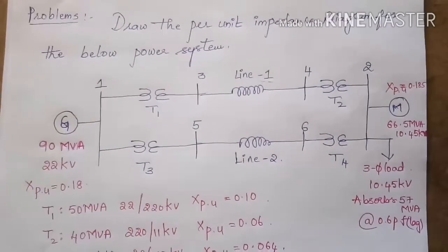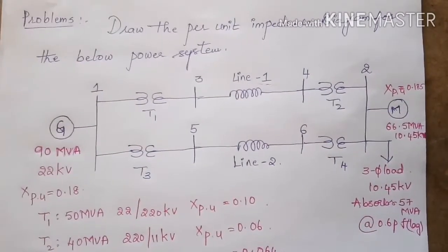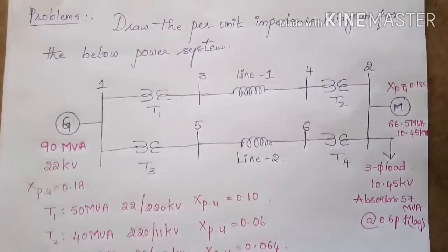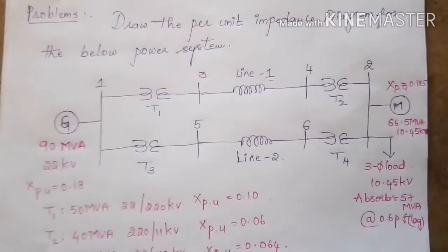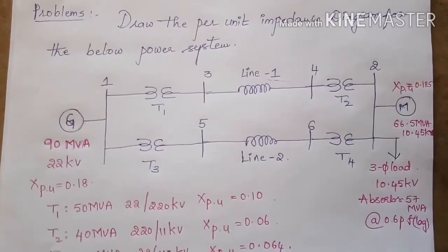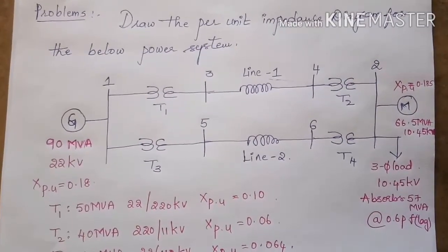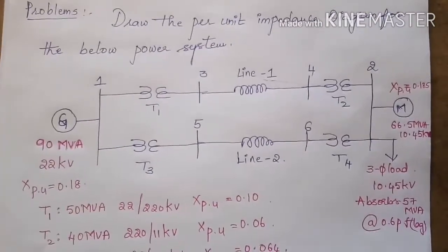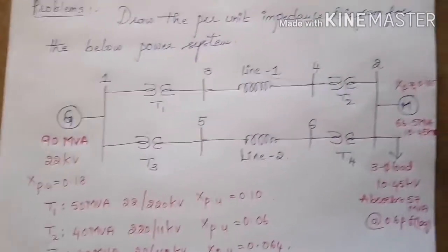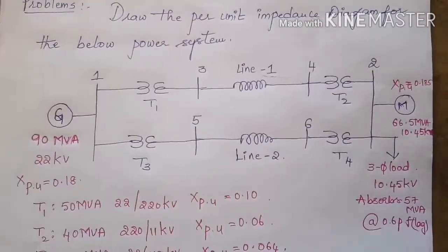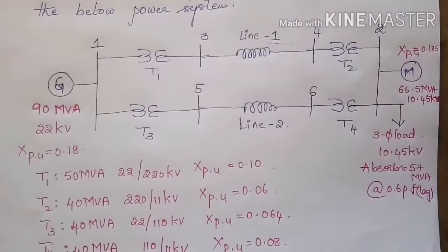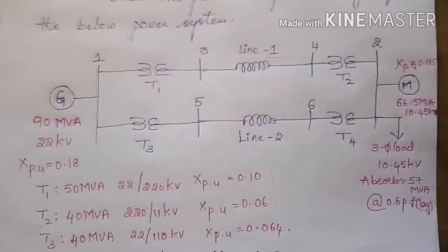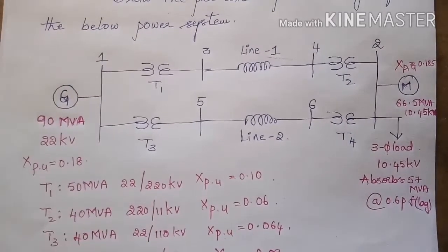Now coming to the problem: a line diagram for a six-bus power system is given. We have to draw the per unit impedance diagram. At bus one, a generator is connected with ratings 90 MVA and 22 kV, and per unit reactance of 0.18. At the receiving end, a motor is connected with ratings 66.5 MVA and 10.45 kV, and per unit reactance of 0.185.